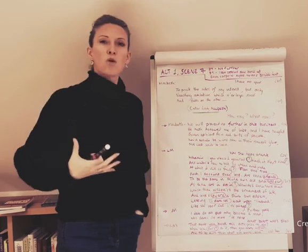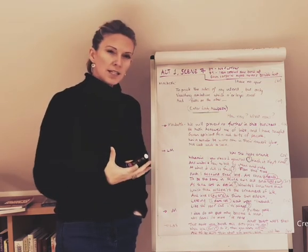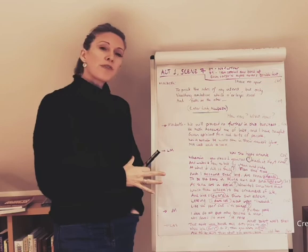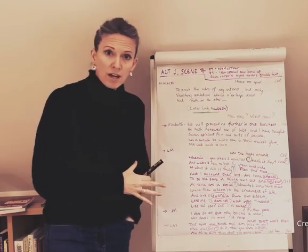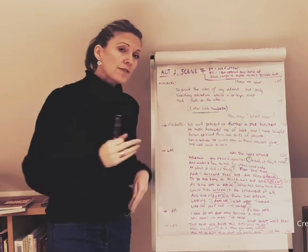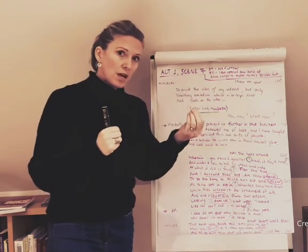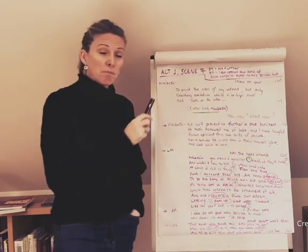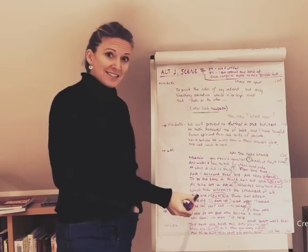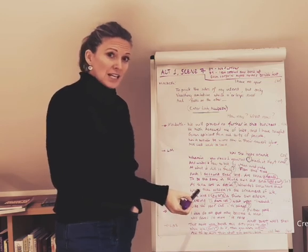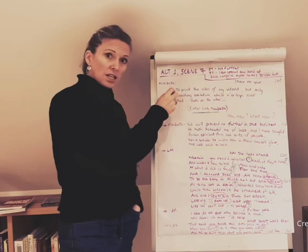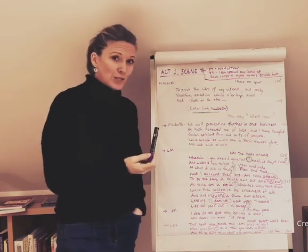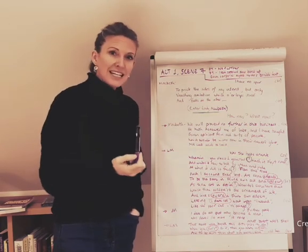We've seen before now Macbeth is this strong warrior, a huge fighter, but suddenly we see him and he comes across quite differently. Thinking about how their relationship is portrayed in this moment, it would be quite hard to argue anything other than Lady Macbeth is absolutely in control. They start the scene in opposite positions — Macbeth doesn't want to go ahead with killing Duncan, Lady Macbeth wants him to kill Duncan so she can become queen. By the end of this scene, Macbeth agrees he is going to do what Lady Macbeth wants. Lady Macbeth influences him, manipulates him and controls him to ensure he does what she wants.